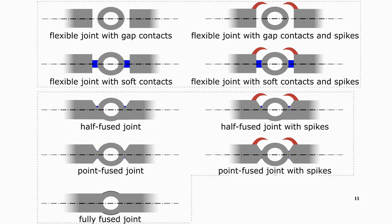In total, we developed 9 different joints which can be classified in two categories of flexible and fused joints as follows. Flexible joint with gap contacts, flexible joint with gap contacts and spikes, flexible joint with soft contacts, and flexible joint with soft contacts and spikes, which belong to the category of flexible joints.